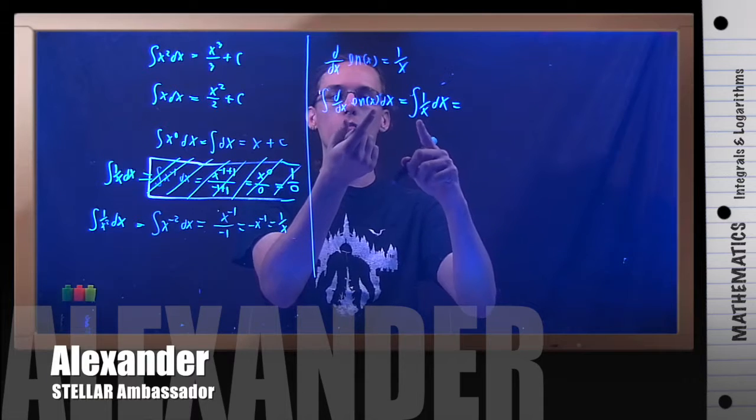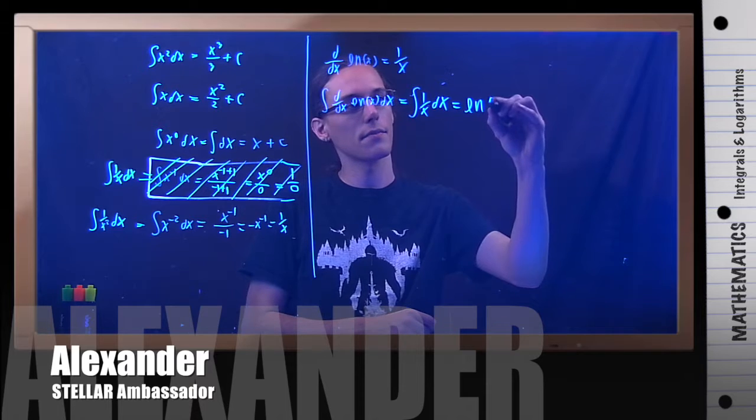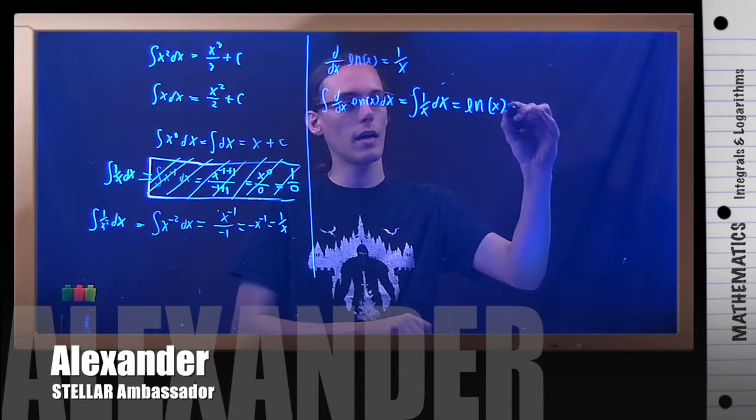So the integral of 1 over x is the opposite of the derivative of the derivative of natural log. So in other words, it's natural log. And then plus c.